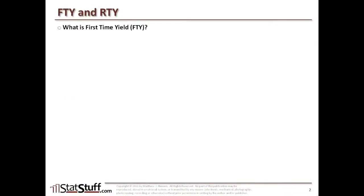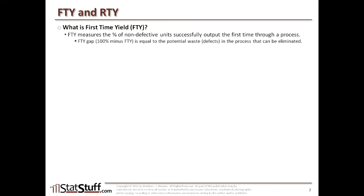First-time yield is a measure of the percent of non-defective units successfully output from the first time through a process. The gap for first-time yield — that is 100% minus the actual first-time yield percentage — is equal to the potential waste or the number of defects in the process that can be eliminated, or you might also refer to it as the percent defective.